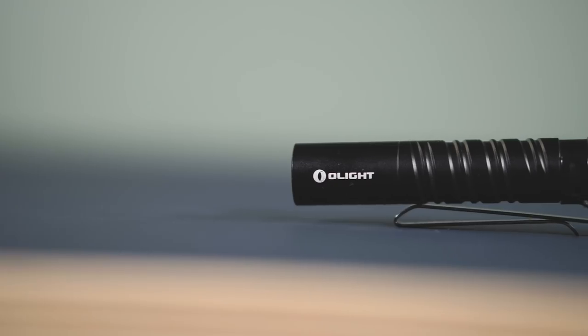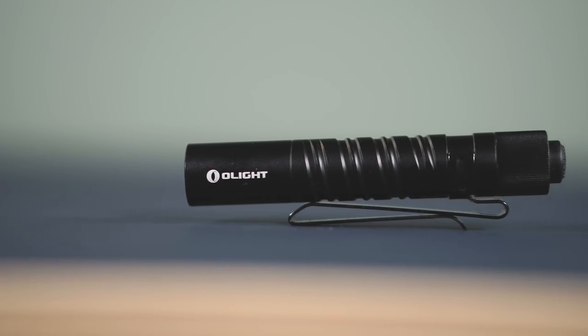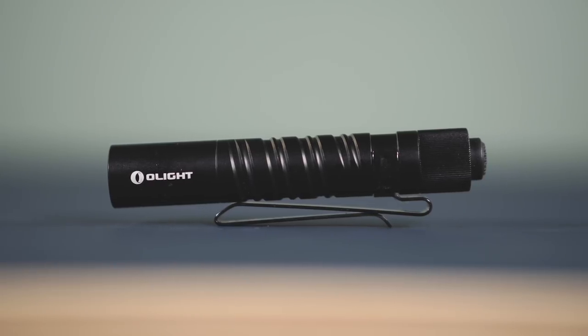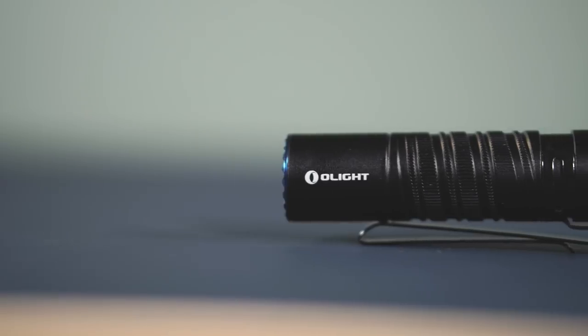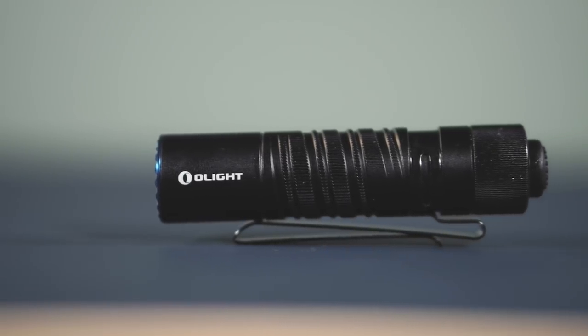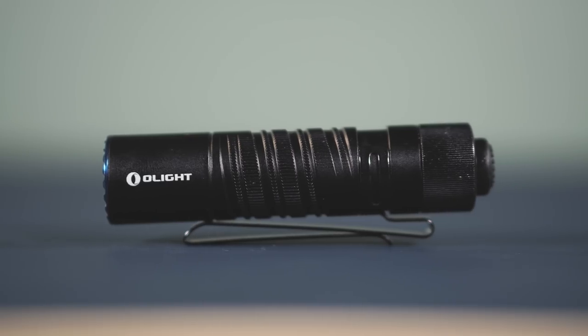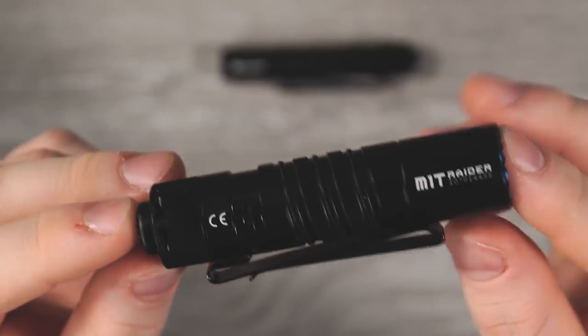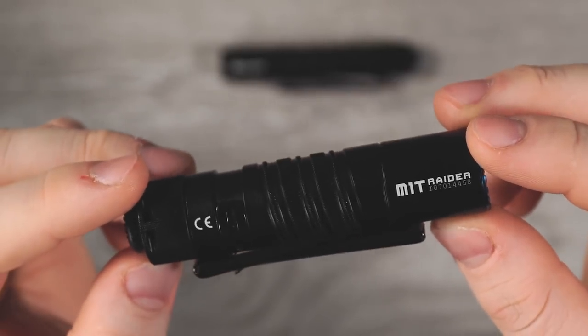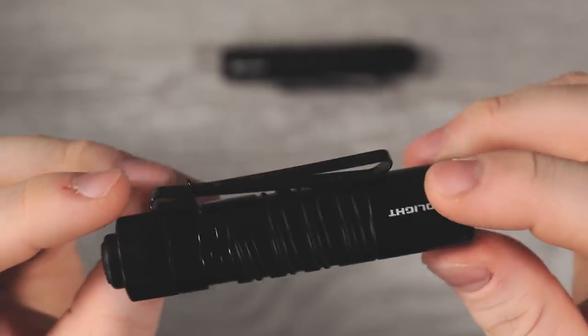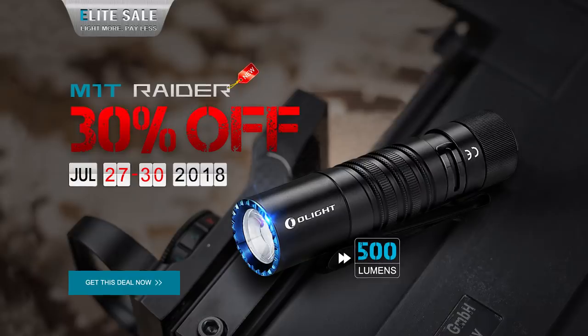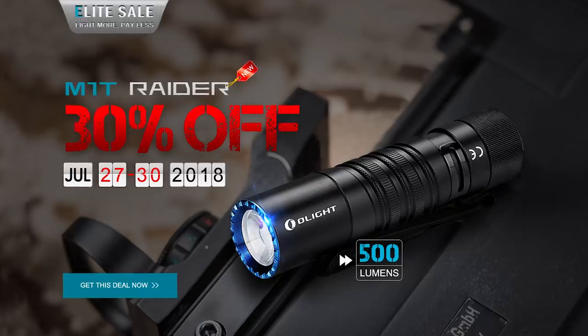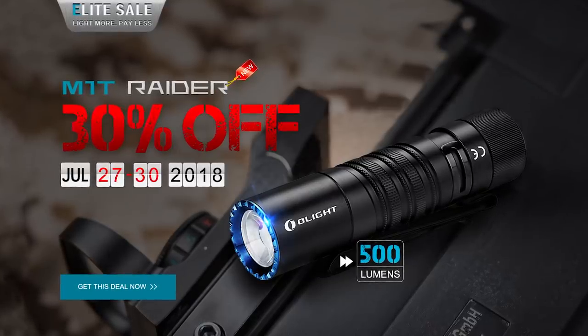The other major difference is going to be your price. The i3T, which is out right now, you can get on Amazon or directly from Olight for just $19.99. Pretty solid flashlight for a pretty fair price. The M1T Raider on the other hand is going to be double that, it's $39.99. It comes out this Friday so it's not available just yet, but you will be able to get it starting this weekend. If you buy it from Olight this weekend you'll be getting it on sale, you can get it for $27.99, so 30% off. The sale starts July 27th at midnight Eastern time and you have the entire weekend to get this thing at a discount.